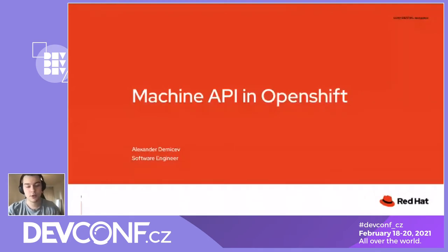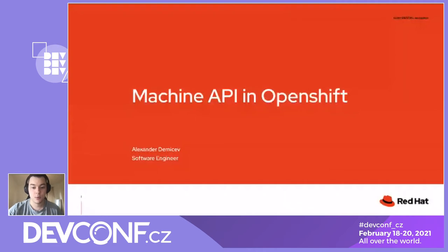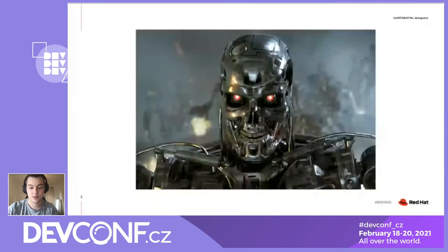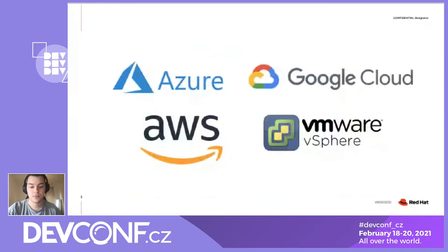So when you hear Machine API, this picture might appear in your head, but in fact we are doing something else. Well, maybe in some way we are trying to controllerize the machines. And as you might know, OpenShift can run on different clouds, both public and private. There are just some examples on that slide like Azure, Google Cloud, AWS, vSphere — it's not the full list, just a couple of examples.